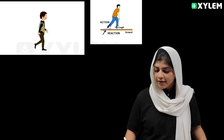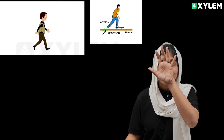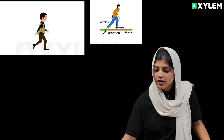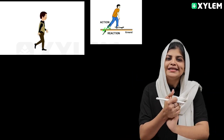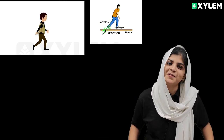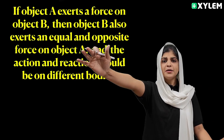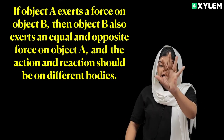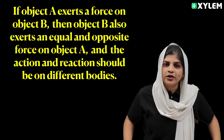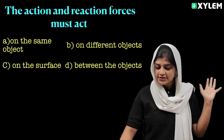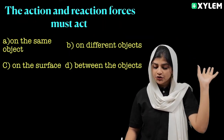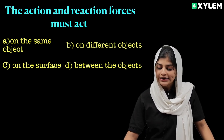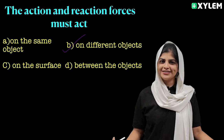When walking, a person exerts a backward force on the ground. The ground exerts an equal and opposite force on the person — this reactive force enables the person to move forward. If object A exerts a force on object B, then object B also exerts a force on object A. The action and reaction forces act on different bodies — that is why they do not cancel each other. The action and reaction forces must act on different objects. That is all about this session. Thank you so much.